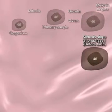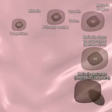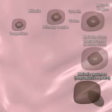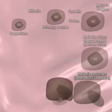Many of the primary oocytes degenerate before birth, but approximately 400,000 will be available to the female over her reproductive years. Beginning at puberty, several primary oocytes start to grow again each month. One of the primary oocytes will outgrow the others and resume meiosis. The other cells degenerate.